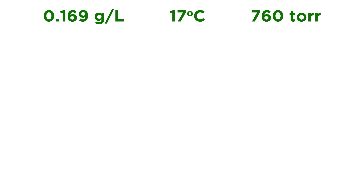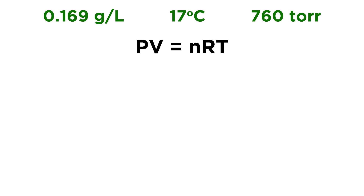Here's our given data: 0.169 grams per liter, 17 degrees Celsius, and 760 torr. We're going to need to use the ideal gas law — that's PV equals nRT. And if we're going to identify this gas, we're probably going to want to find the molar mass of the gas. Molar mass is grams per mole. We have some information associated with mass — we have a density, so that helps.